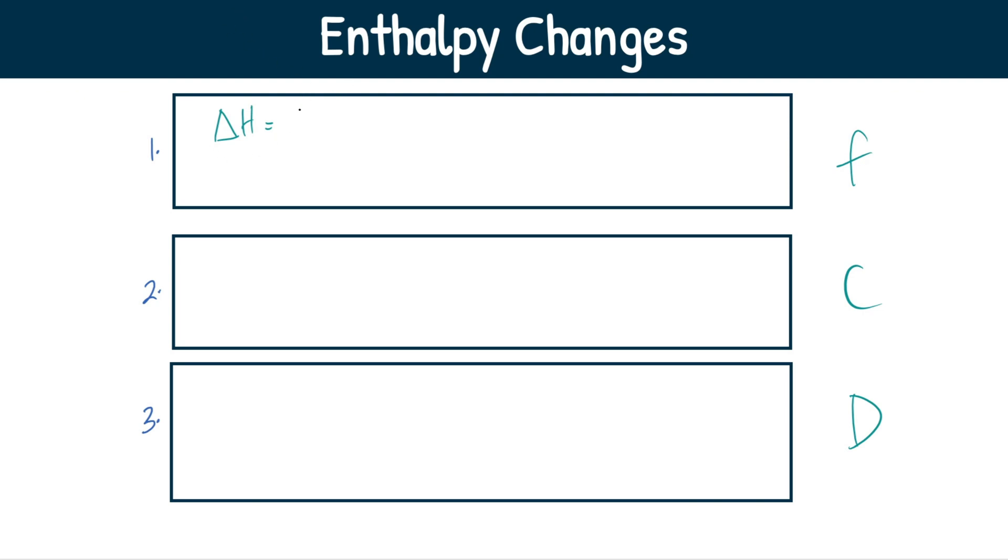So the enthalpy change when we're dealing with formation is going to be the sum of enthalpy of formation. I'm going to write it out at the top and then I'm going to write it out as symbols just below it. So you can use the shorthand if you want. And this is going to be the sum of the enthalpy of formation of products minus the sum of enthalpy change of formation of reactants. Super easy one to remember.